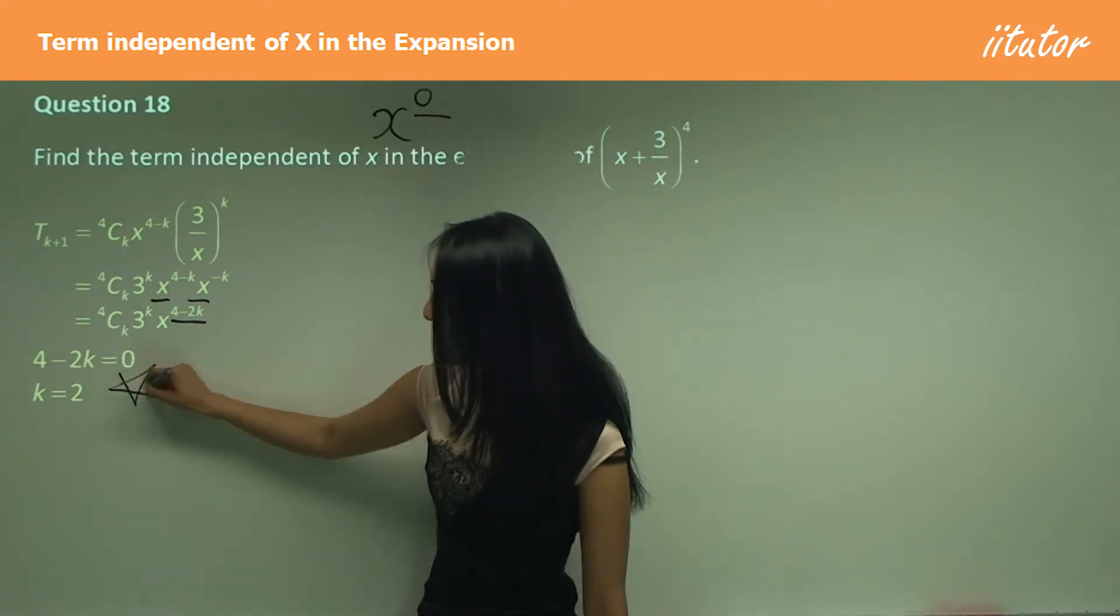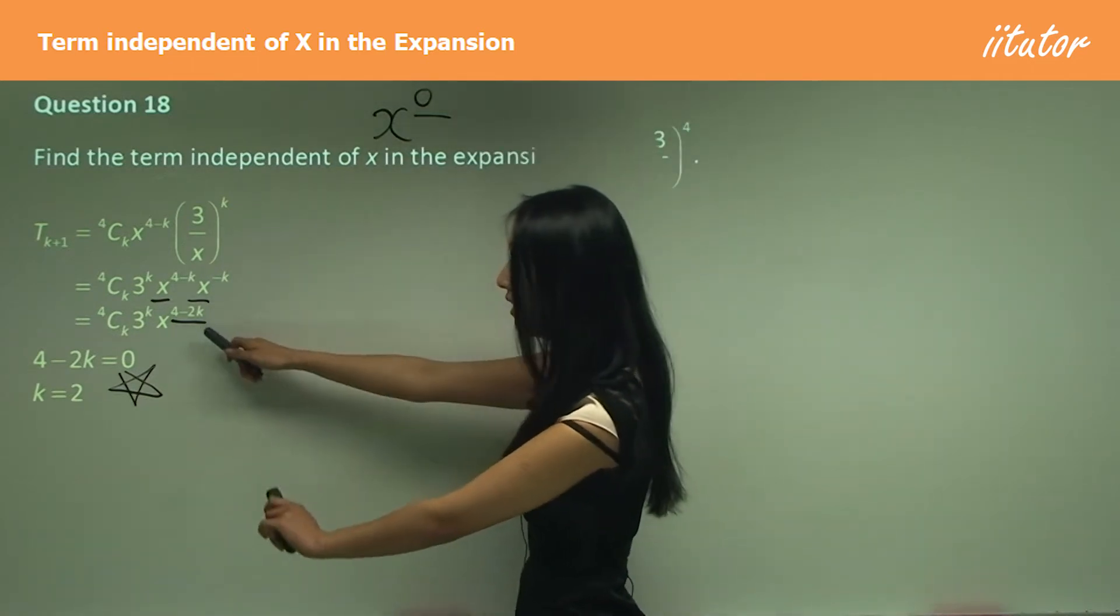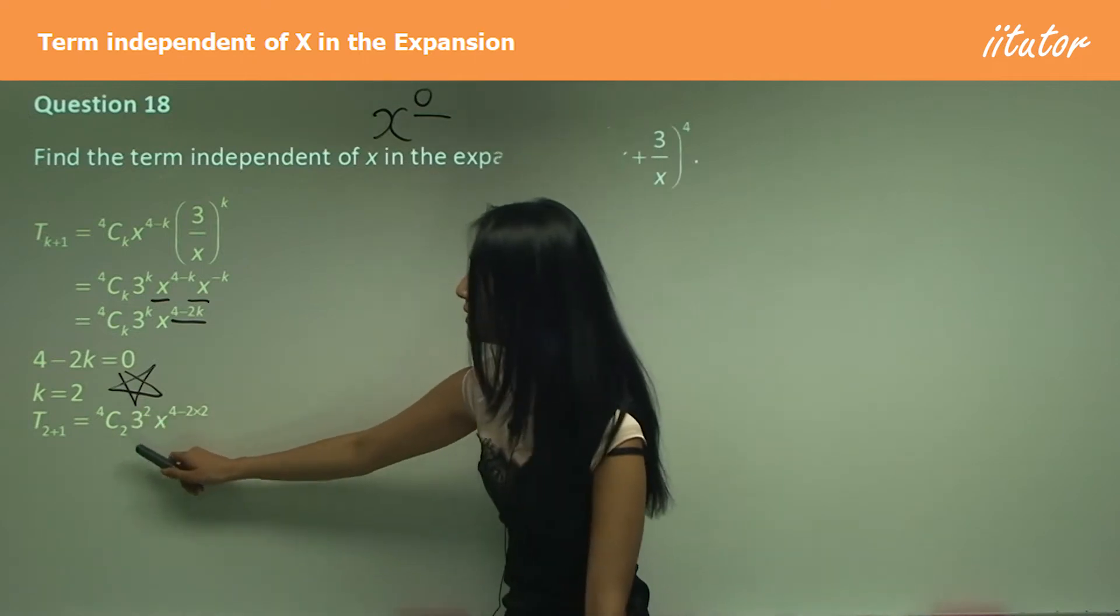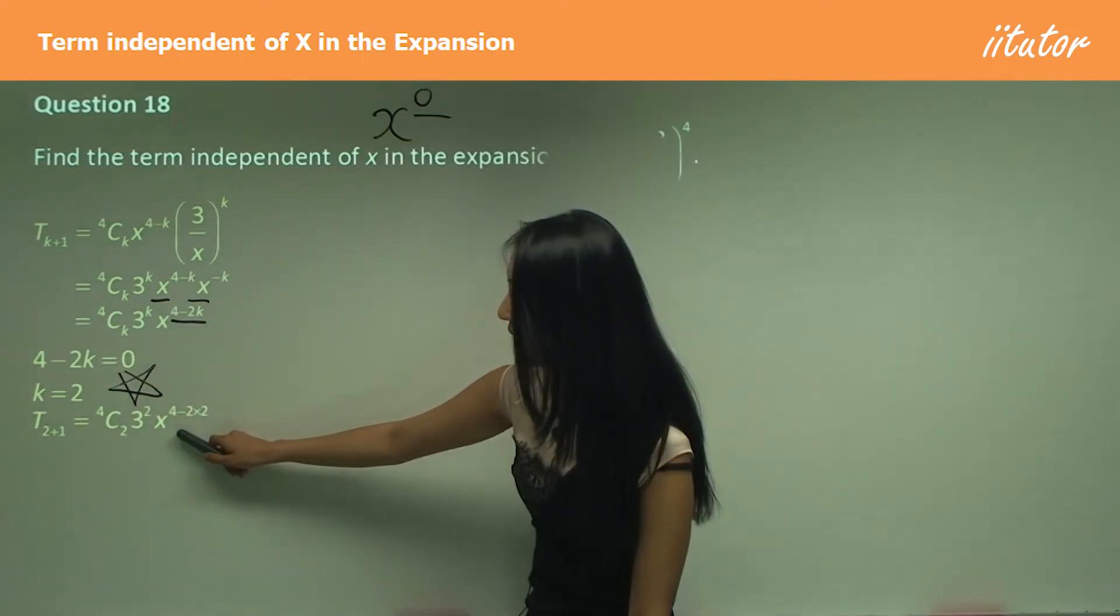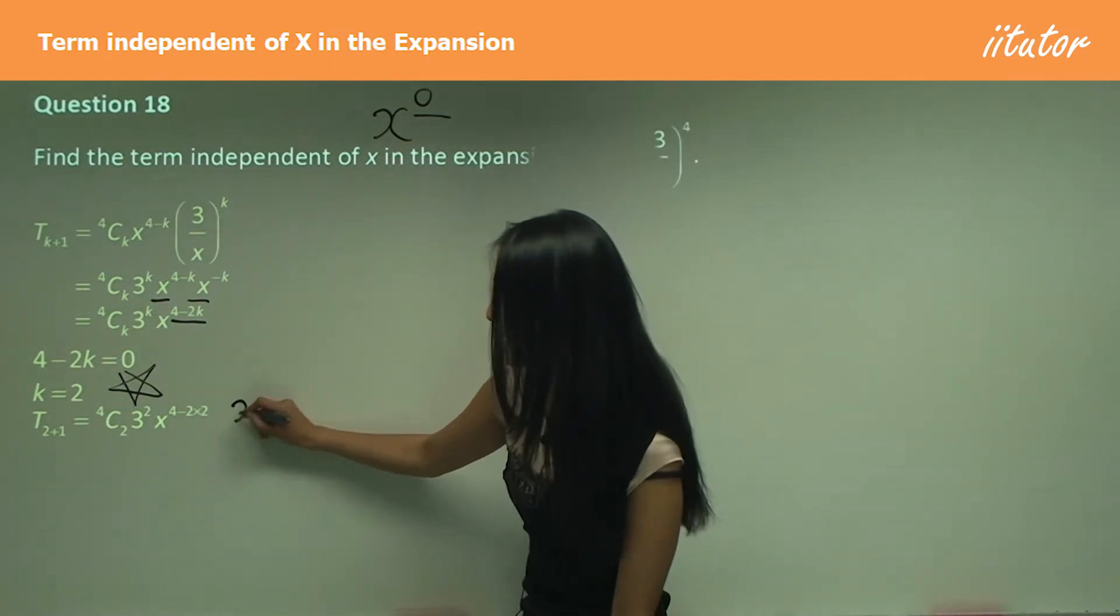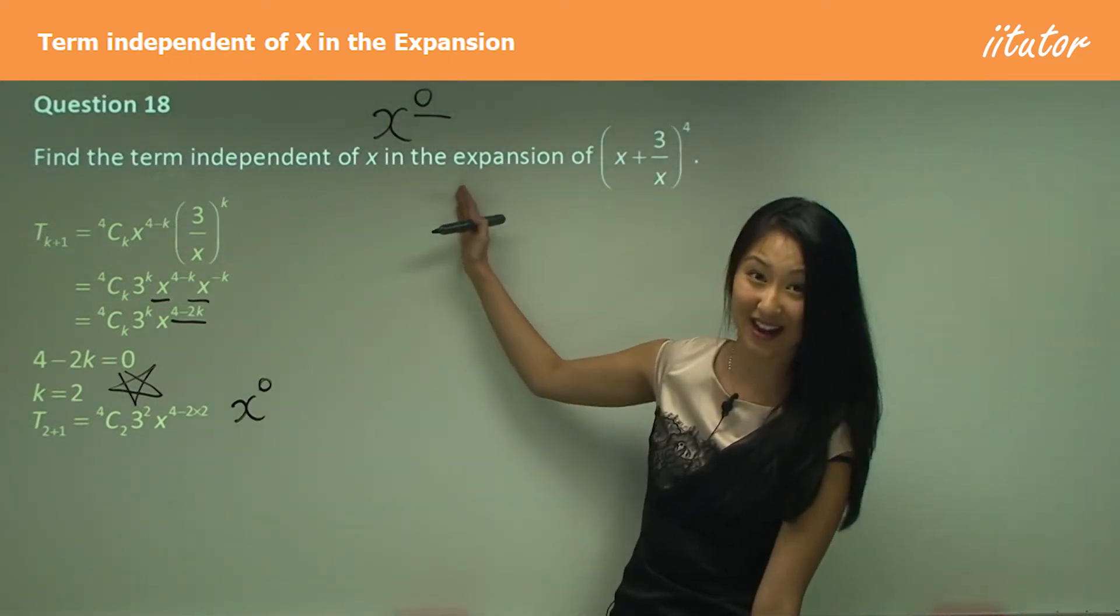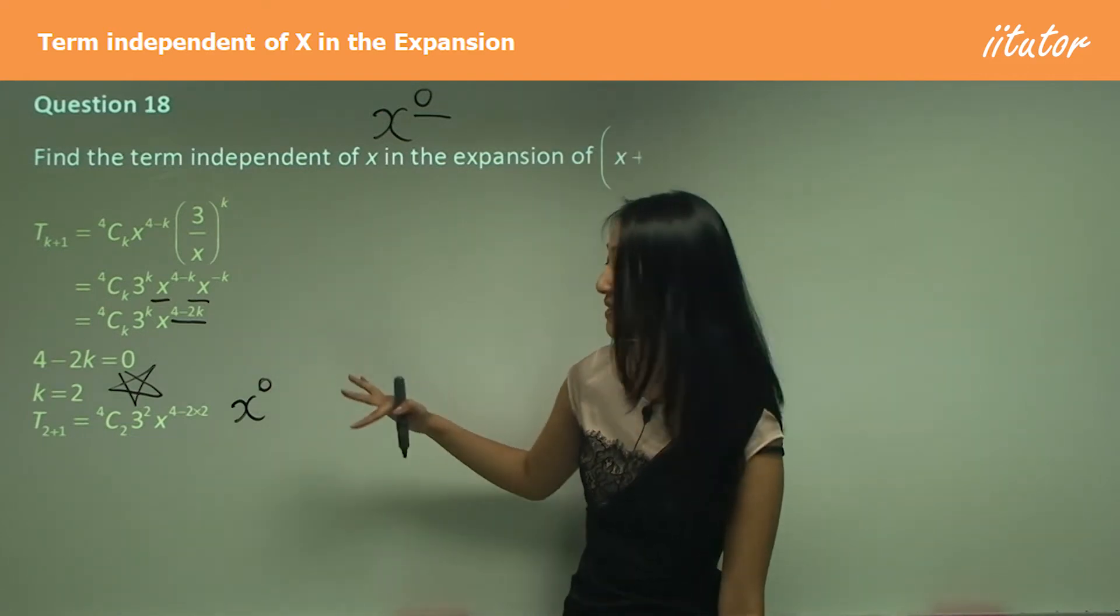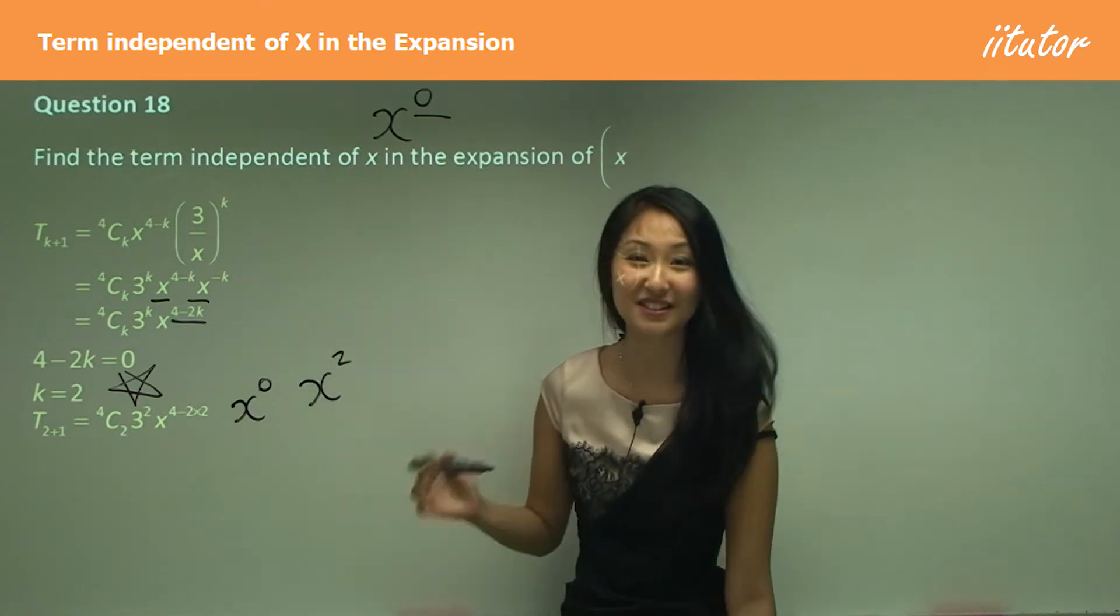Now once we've worked out k equals 2, substitute back into the term: 4C2 times 3^2 times x^(4-2×2), so that's x^0. You know that already because we made it independent of x, but it's also a good way to double check. If you got x^2 for example, you know something's gone wrong.